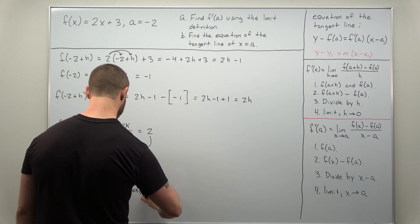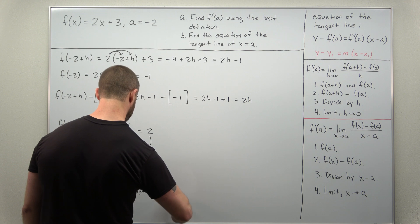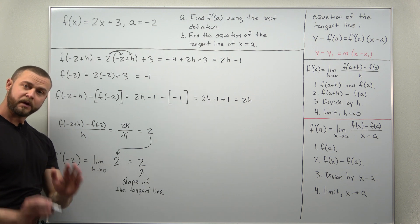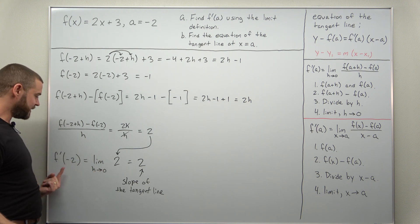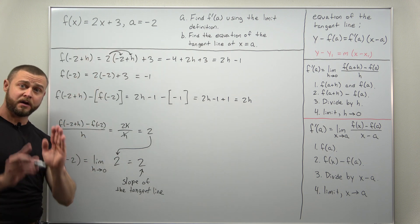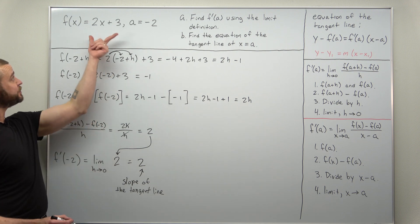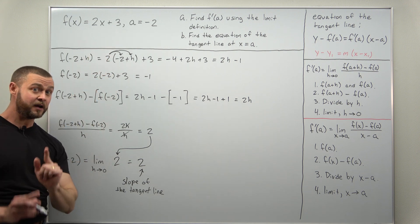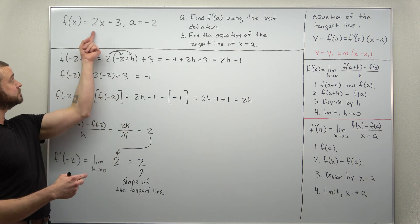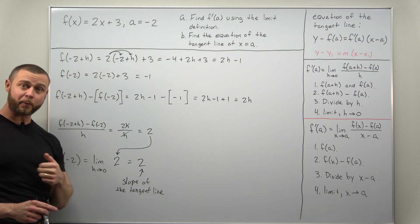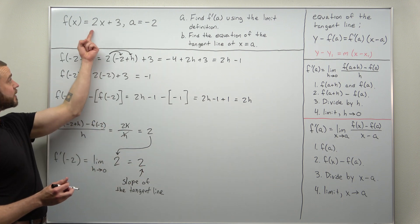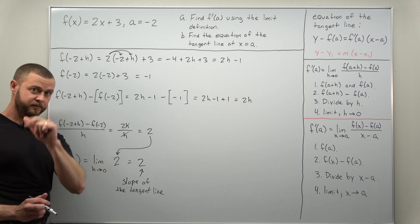Let's think about this for a second. We found that the slope of our tangent line comes out to 2. Notice the function is of the form y equals mx plus b — the graph is a straight line with slope 2. So the tangent line is really just the line for your function and it overlaps everywhere with the graph. It shouldn't be a surprise that the slope of the tangent line is 2, since we have a linear function for this example.